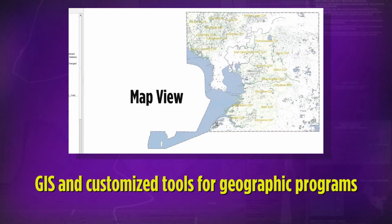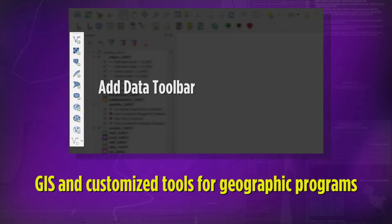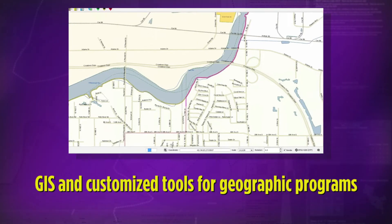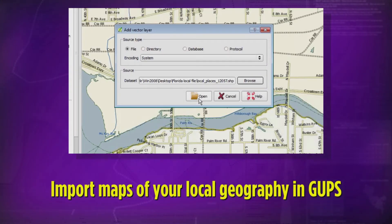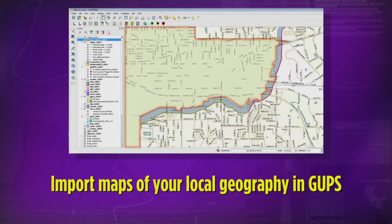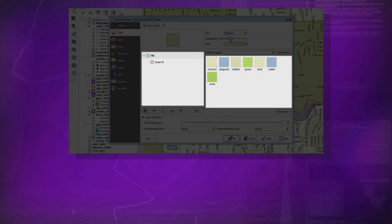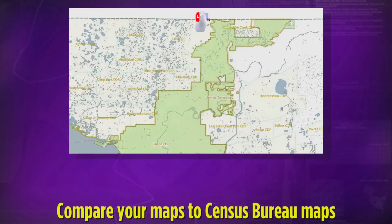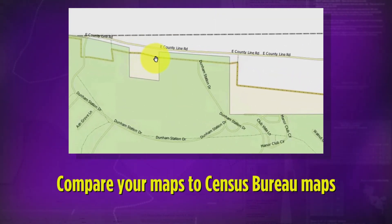GUPS offers a robust and easy-to-use interface, including not only standard navigational and GIS tools, but also tools customized for functions specific to Census programs which collect geographic data. In GUPS, participants can import maps of their own local geography. These spatial map files are most commonly Esri shapefiles. Users can customize the appearance of layers, turn layers on and off, and view and compare their geographic files with those of the Census Bureau.